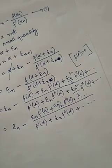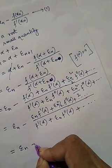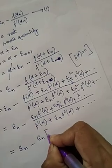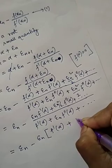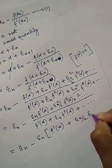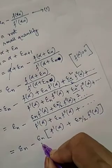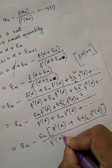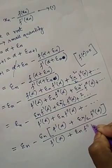Now let us take epsilon_n common from the numerator. So we will have epsilon_n times the quantity f'(alpha) plus epsilon_n over 2 times f''(alpha) plus higher order terms, all divided by f'(alpha) plus epsilon_n f''(alpha) plus higher order terms.